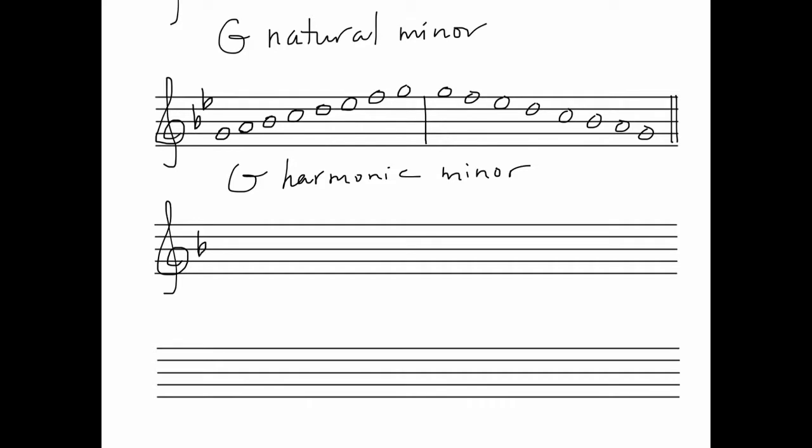Next, let's do G harmonic minor. We need the same key signature, which is B flat and E flat. We're going to start on G. And when we get to the seventh note, F, we need to raise it to become F sharp. Bar line and repeat coming down. And that's G harmonic minor.